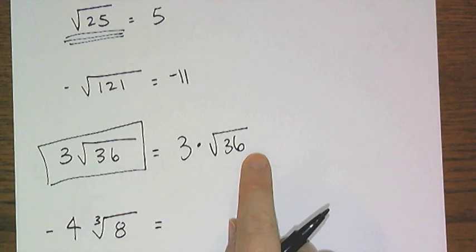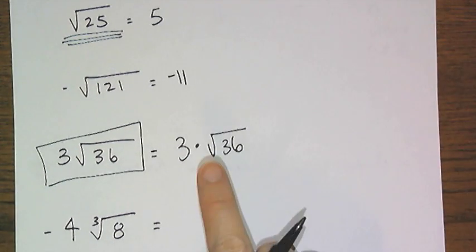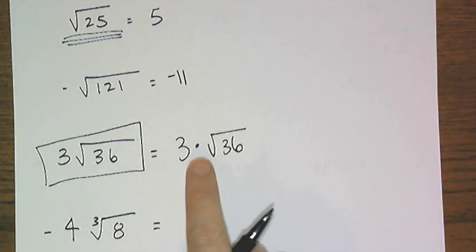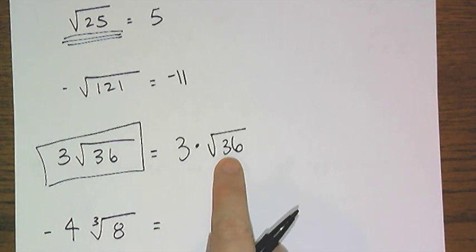Now in this case, and in all cases, we have to follow the order of operations. So this is a multiplication, and this is a radical.